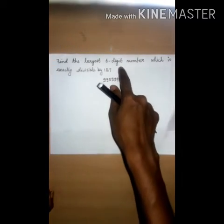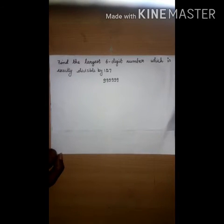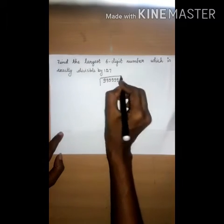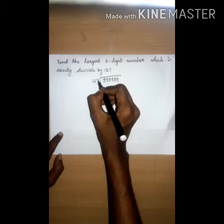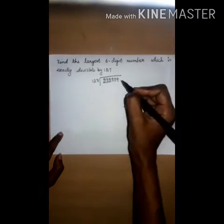Now we need the largest 6-digit number which is divisible by 127. So let us check if this number is divisible by 127 or not. Just divide and see. 3 digits we can take.